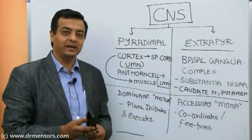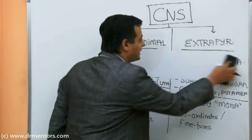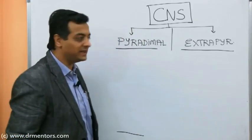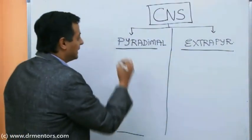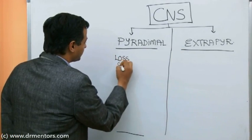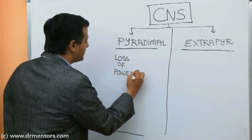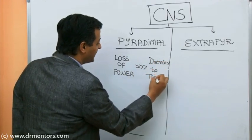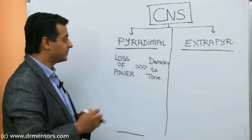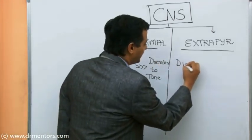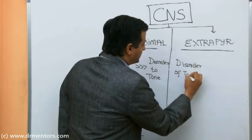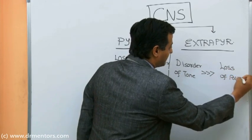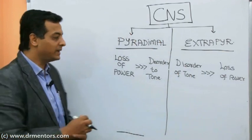Once we know the anatomy and physiology, we can apply it to medicine. If there is a defect in the pyramidal system, the main symptom is loss of power, which is disproportionate to the disorder of tone. If the lesion is in the extra-pyramidal system, the disorder of tone is disproportionate to the loss of power — that is the key differentiating feature.